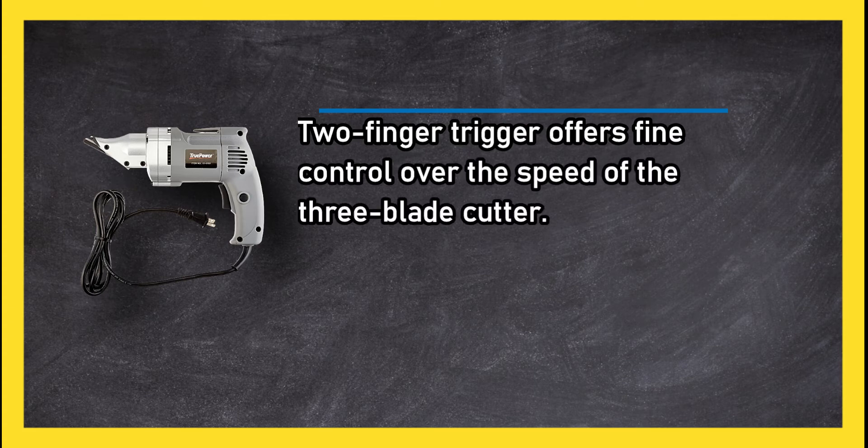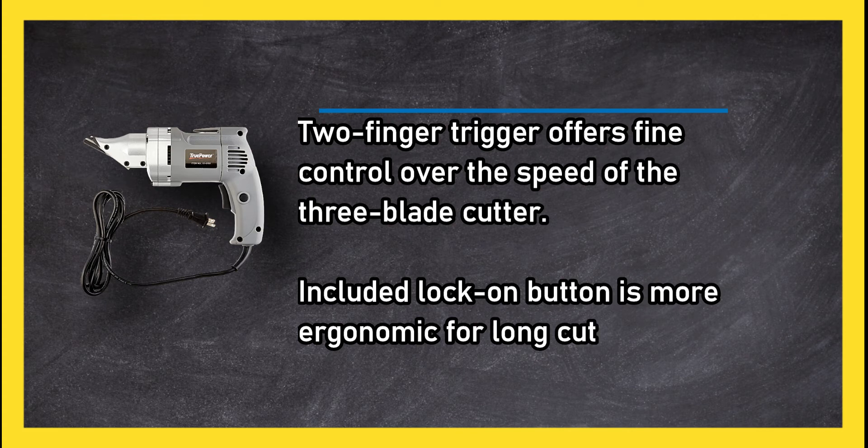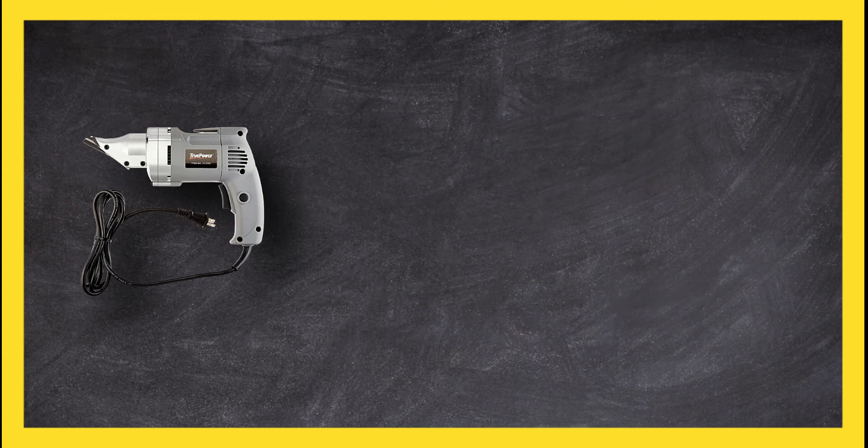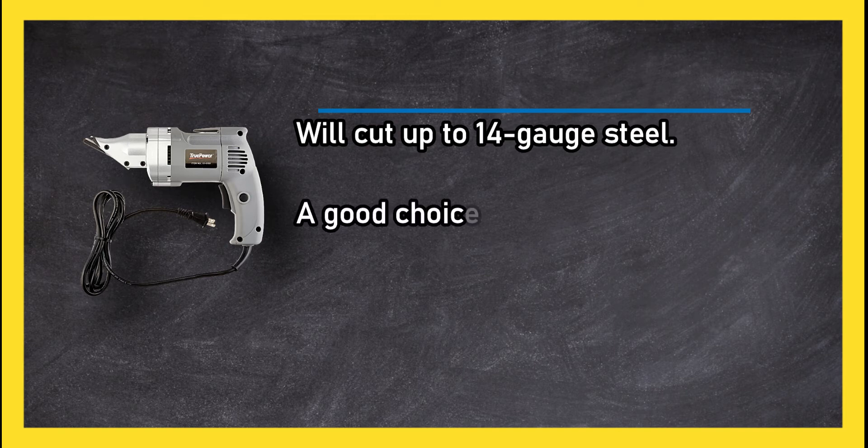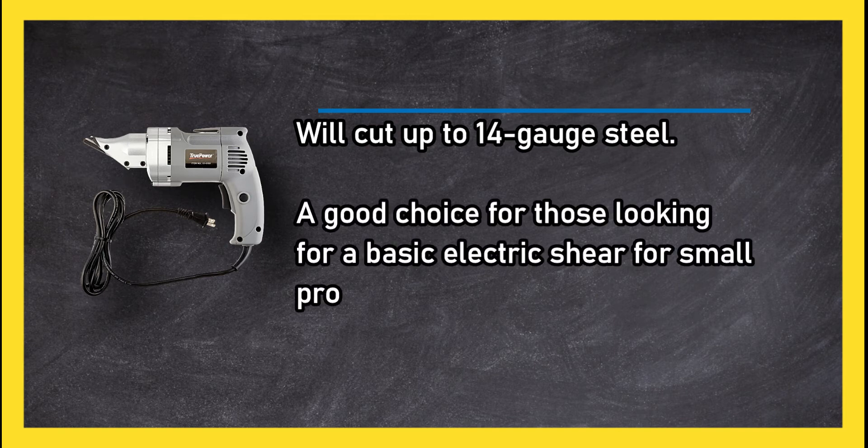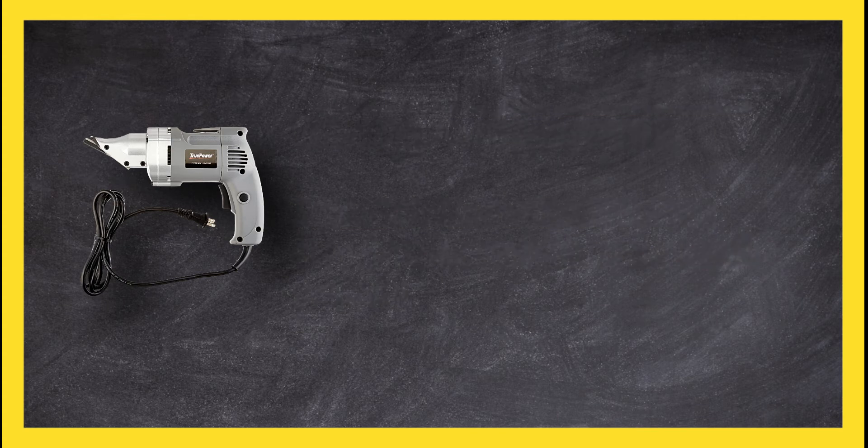Included lock-on button is more ergonomic for long cuts. Will cut up to 14 gauge steel. A good choice for those looking for a basic electric shear for small projects. Takes longer to cut through thick, hard metals like steel than other shear options.